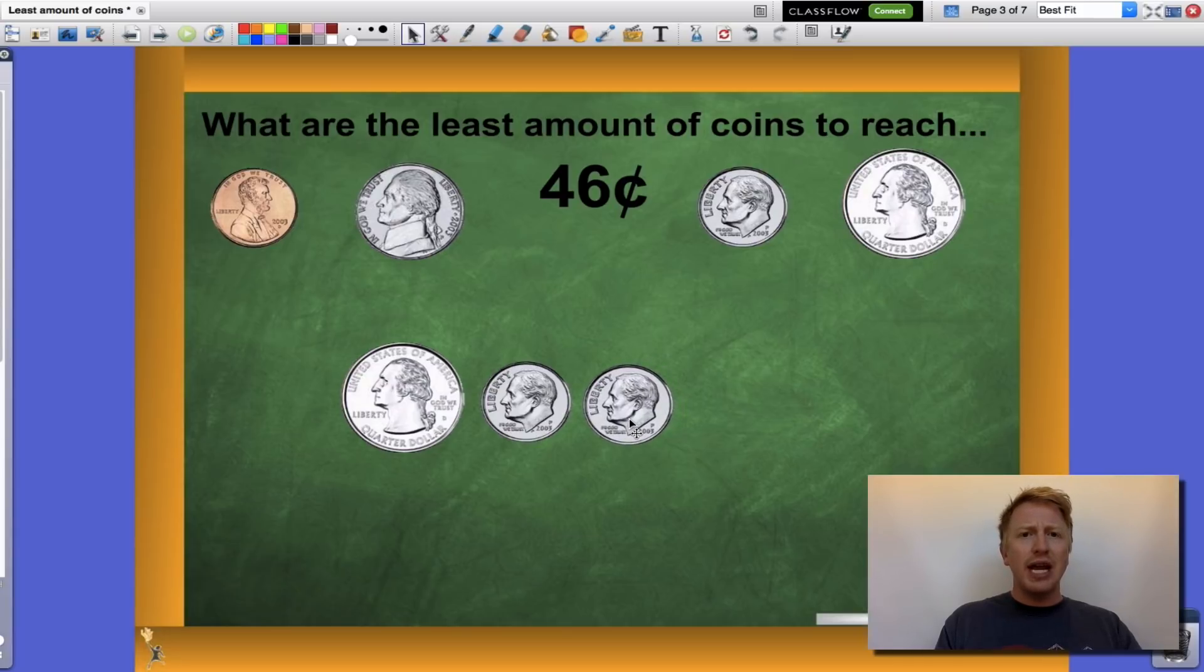Well, I'm one away now. Which one of my coins will help me get there? My penny. My penny is worth one cent. If I add that to the mix, a quarter, two dimes, and a penny is worth forty-six cents, and it is the least amount of coins that will get me to that value.